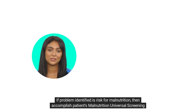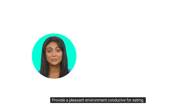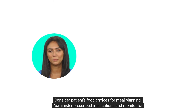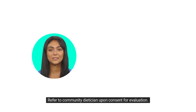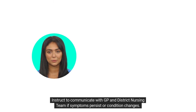If the problem identified is risk for malnutrition, accomplish the patient's Malnutrition Universal Screening Tool (MUST) monthly. Calculate BMI and MUST score and act as per guidelines. Provide a pleasant environment conducive for eating and consider the patient's food choices for meal planning. Administer prescribed medications and monitor for effectiveness after 30 minutes. Refer to the community dietician upon consent for evaluation. Encourage small frequent feedings and snacks. Instruct to communicate with the GP and district nursing team if symptoms persist or condition changes.